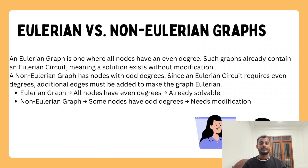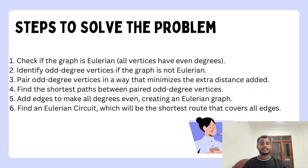A graph is Eulerian if it has an Eulerian circuit, meaning it's possible to start at one vertex, traverse every edge exactly once, and return to the starting vertex. A graph is non-Eulerian if it doesn't have an Eulerian circuit. A graph can either have no Eulerian path, an Eulerian path, or an Eulerian circuit. This distinction helps us know what approach to take when solving the Chinese postman problem.